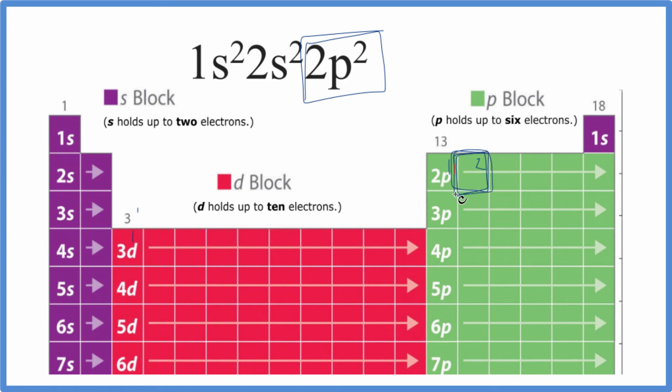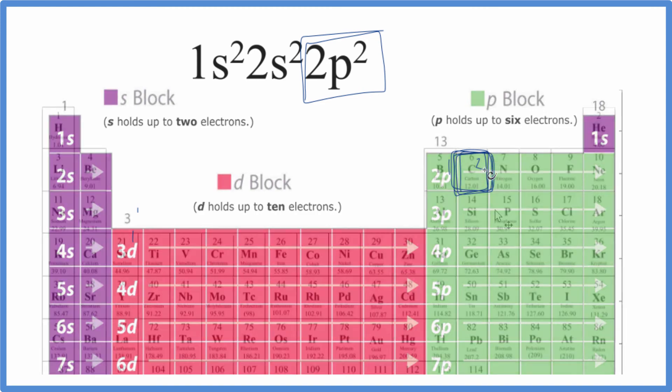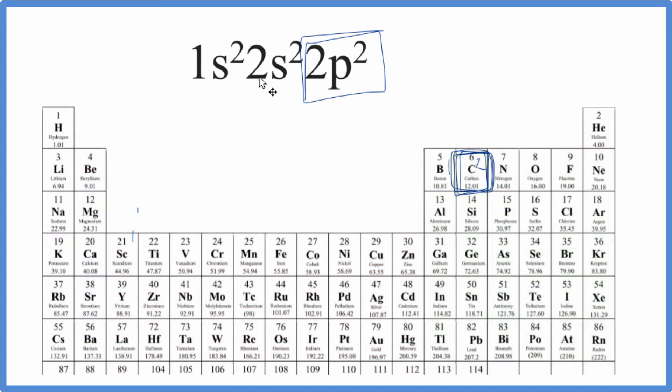Let's go back to the periodic table with all of the elements written in. And just like before, we have this 1s2, 2s2, 2p2. The electron configuration is going to be carbon.